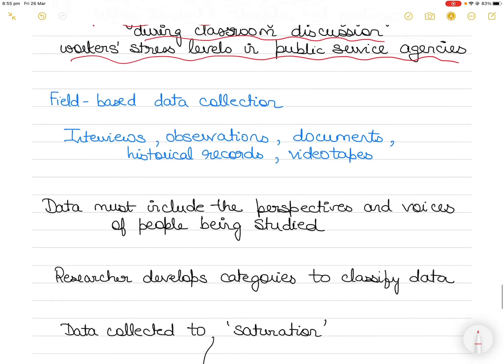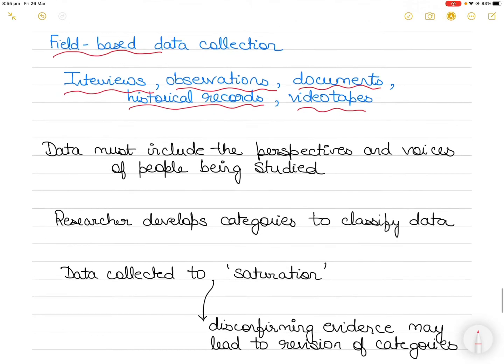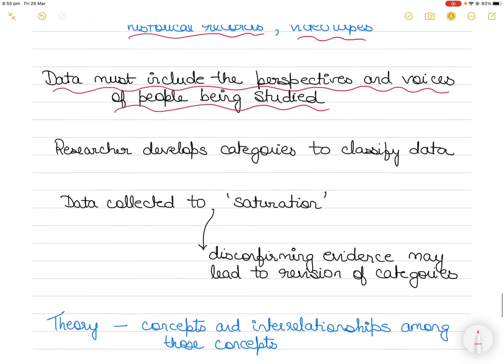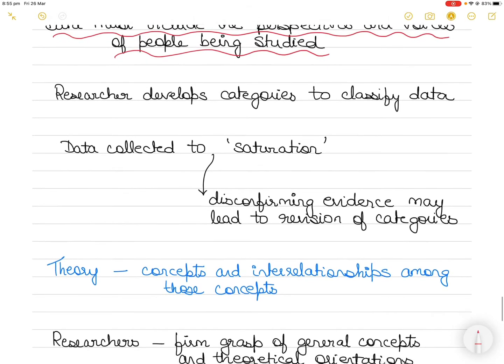It is flexible and likely to change over the course of investigation. Interviews do play a major role in data collection but you can also use observations, documents, historical records, videotapes, and anything else of potential relevance to the research question. The only restriction is that the data collected must include the perspectives and voices of the people that you are studying.